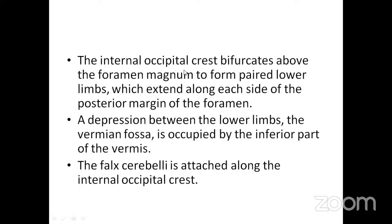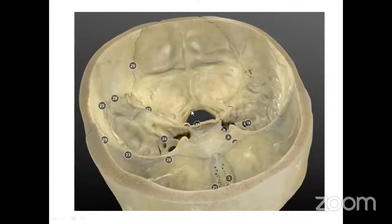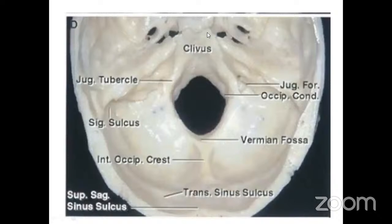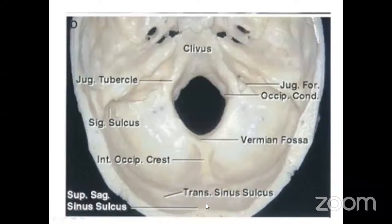The internal occipital crest bifurcates above the foramen magnum to form paired lower limbs extending along each side of the posterior margin. Between the lower limbs is the vermian fossa — a shallow depression where the vermis of the cerebellum lies. The falx cerebelli attaches along the internal occipital crest, and the tentorium cerebelli also emerges from this crest.